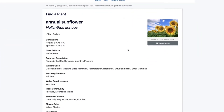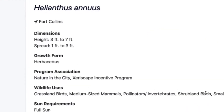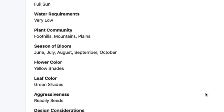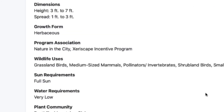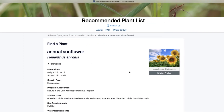Each plant within the recommended plant list has its own profile. Within the profile you'll see things like dimensions, growth form, wildlife uses, and a whole lot of other information. You can scroll down and check out all the information about this one particular sunflower. That's how we search for just one plant at a time.